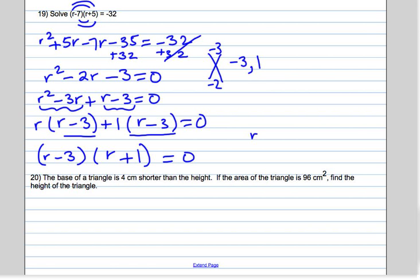Now we set each set of parentheses equal to zero. That means r minus 3 is equal to zero, which means r is equal to 3. And r plus 1 is equal to zero, so you add 3 to both sides, you get r equals 3, and you subtract 1 from both sides, you get r equals negative 1. Those are our two answers.